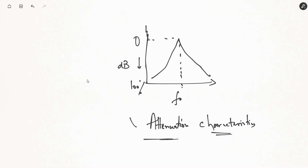Regarding attenuation characteristics: at the operating frequency where we want to derive the output, attenuation will be zero decibels. The surrounding frequencies will be attenuated — falling to around 0.7 or 70 percent of the frequency component — and eventually attenuated completely, up to 100 percent. All surrounding frequency components are essentially noise that we want to remove.